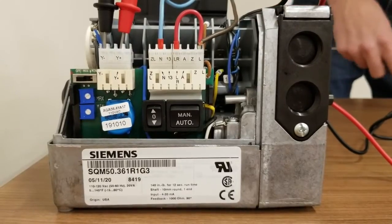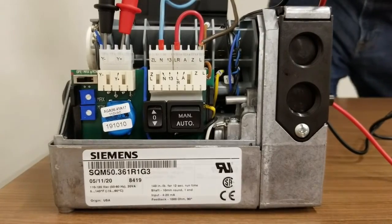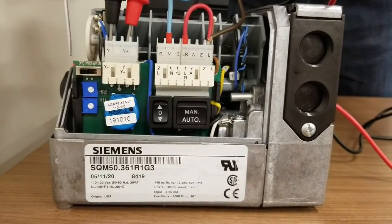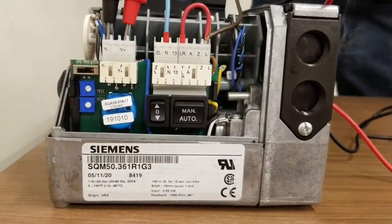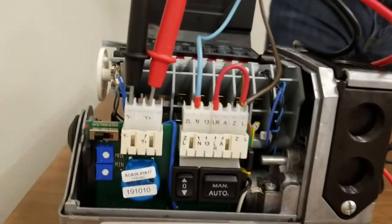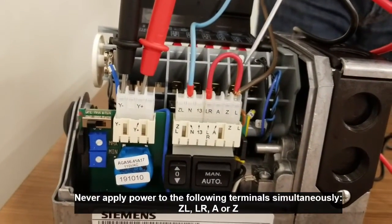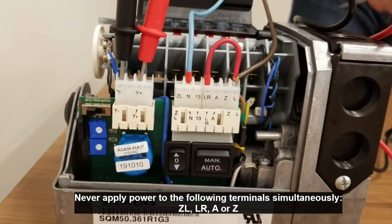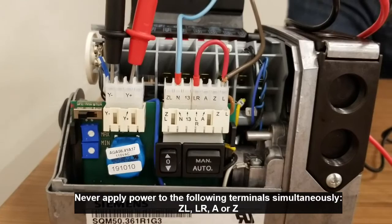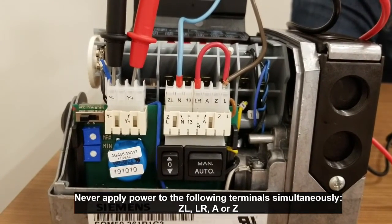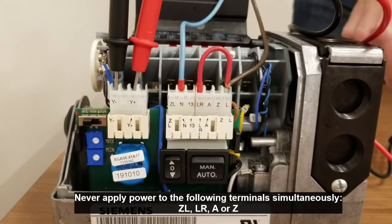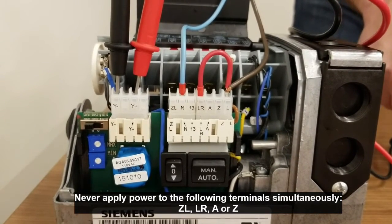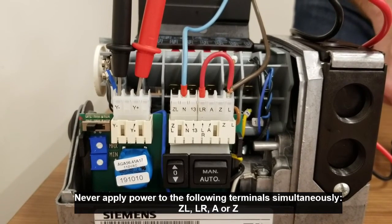So here we have the actuator wired up. First thing I want to point out is that this OPE max min switch is set to the OPE position. And you'll also notice that I have line voltage on the LR terminal here. It's very important to note, you do not want to power multiple input terminals at once. You do not want power supply to the A, Z, ZL, or LR terminal simultaneously. Only one of those terminals should be powered at once.